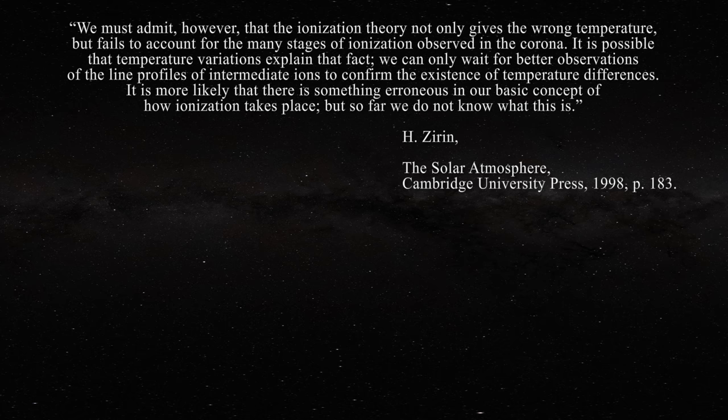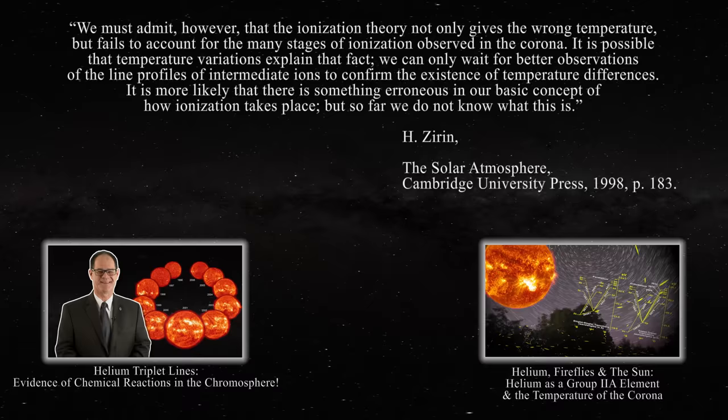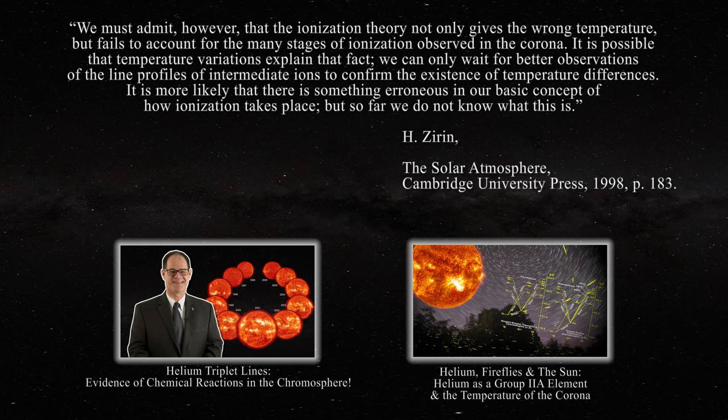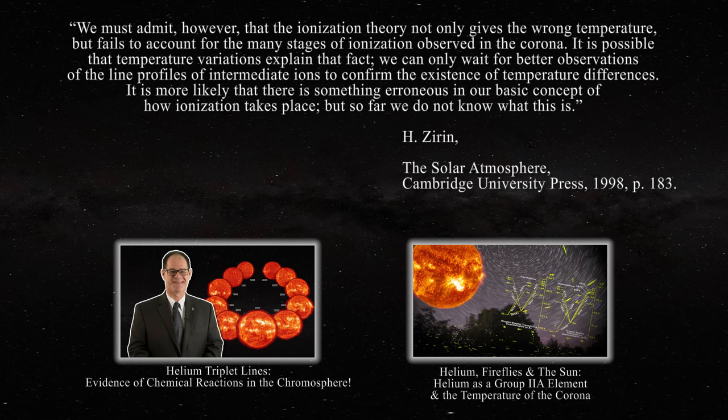The unrealistic temperatures claimed should have prompted further inquiry, but no one except Zirin expressed any doubt. The examples given in two previous videos relative to the chemical selection of triplet lines in helium versus the singlet lines are sufficient to prove that we are not dealing with random processes in the atmosphere of the Sun. What we observe is not governed by temperature but by chemistry.